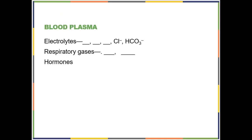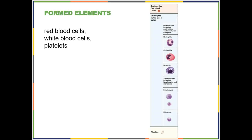The rest of the stuff in plasma, just know what's in there. Electrolytes — you can probably guess: sodium, potassium, and calcium are the big three. Respiratory gases: oxygen and carbon dioxide. And then hormones from the chapter we just finished.